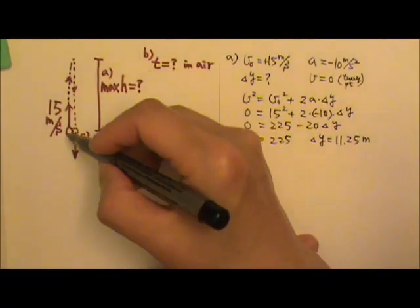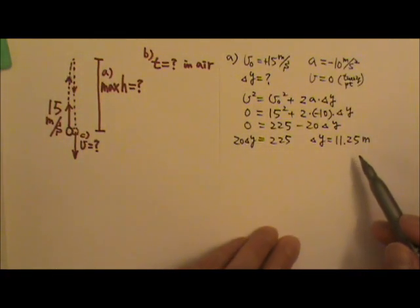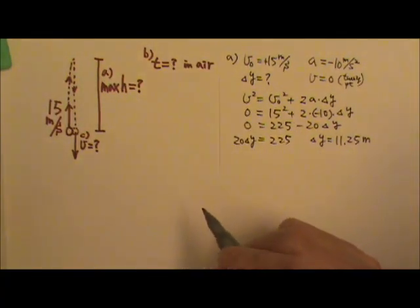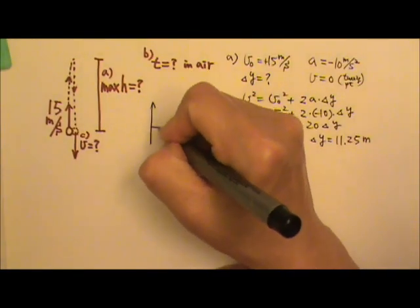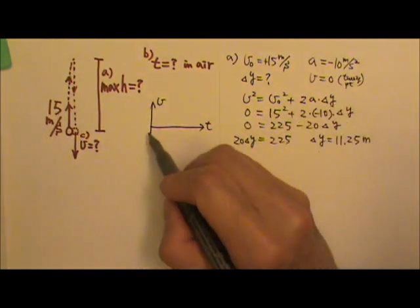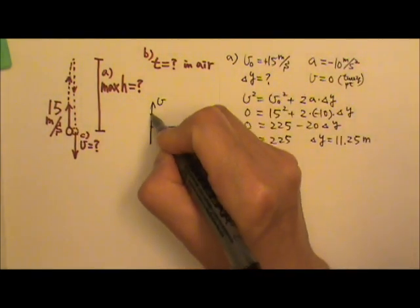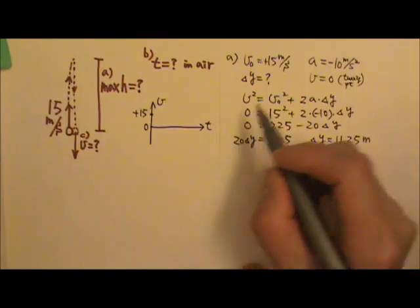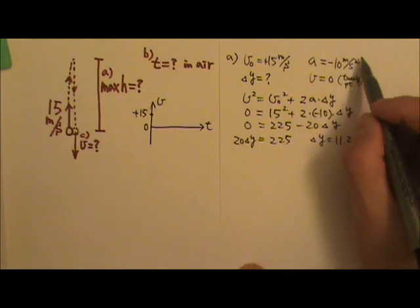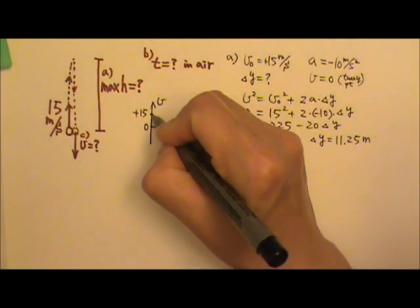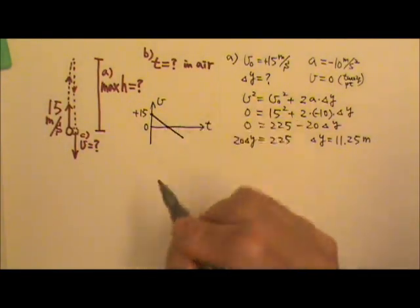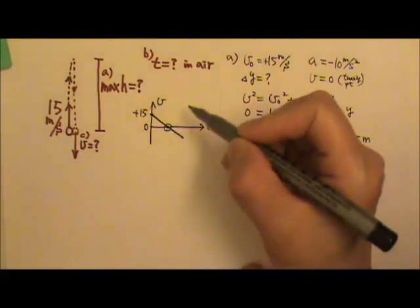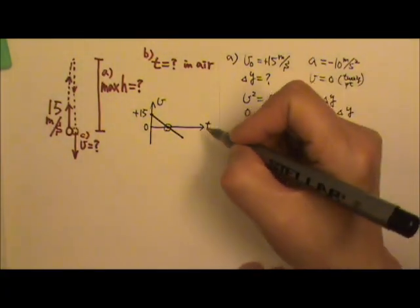So the maximum height it reaches is 11.25 meters. Now before we find the time, let's first plot a velocity versus time graph. The velocity starts at positive 15. The slope of a velocity versus time graph is the acceleration, so the slope should be a constant negative 10. The velocity becomes zero right at the turning point — that's the maximum height.